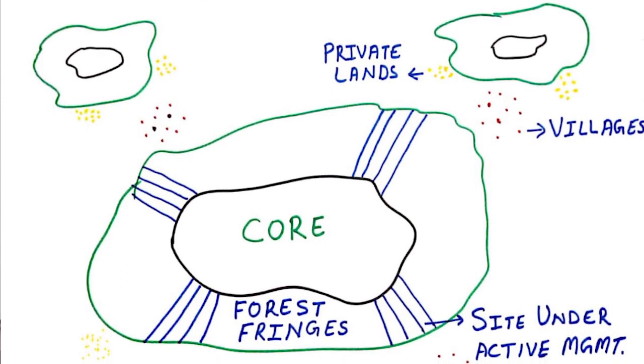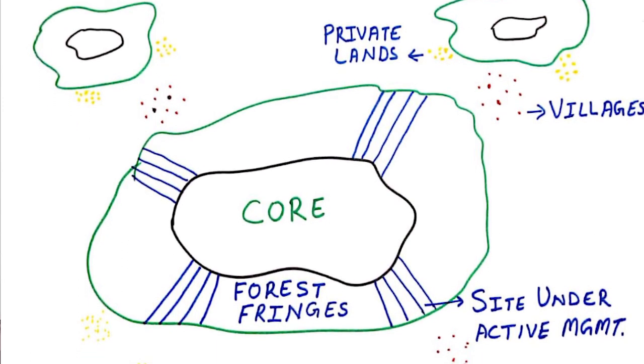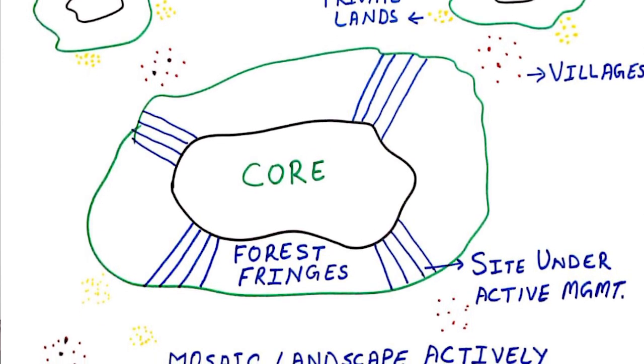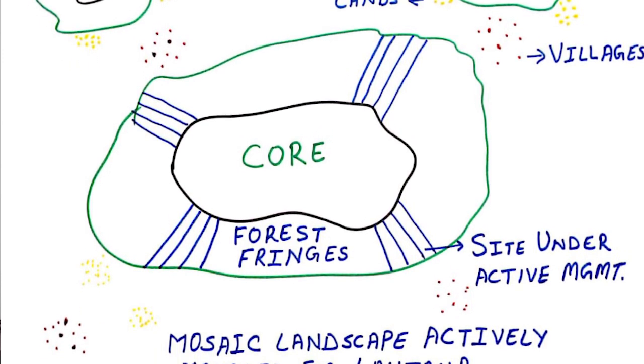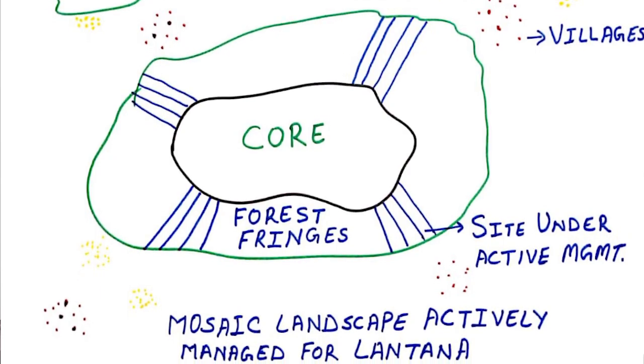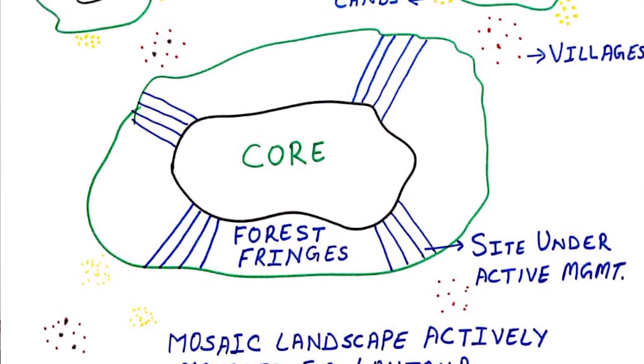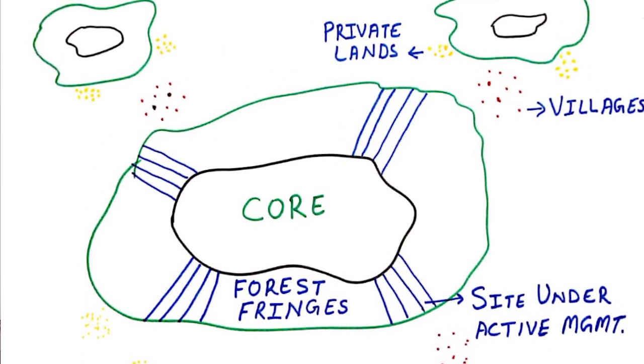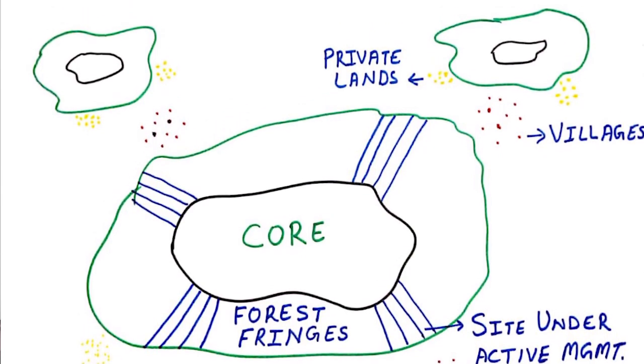To understand what active management is, let us take a look at this diagram. This is showing a typical forest interspersed with an agriculture kind of landscape. You have a big forest patch in between, with a core and a forest fringe area. The forest fringe area is slightly more open, so there is more space for Lantana to grow, and largely this is the area which is thickly infested with Lantana.